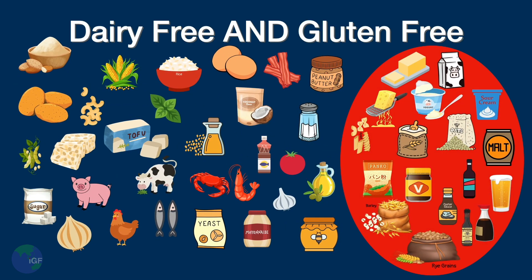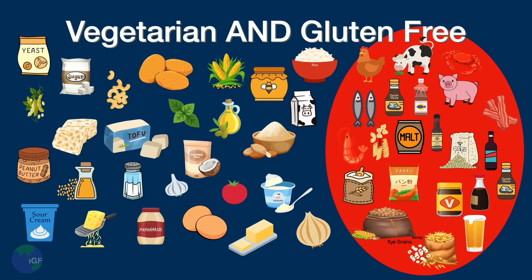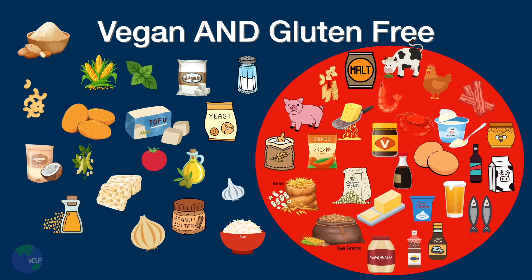People who are gluten- and dairy-free must eliminate all wheat, rye, barley, and regular oats, as well as milk, butter, cheese, and any dairy products. Some people who are gluten-free are also vegetarian — they eliminate meat as well as gluten-containing products.